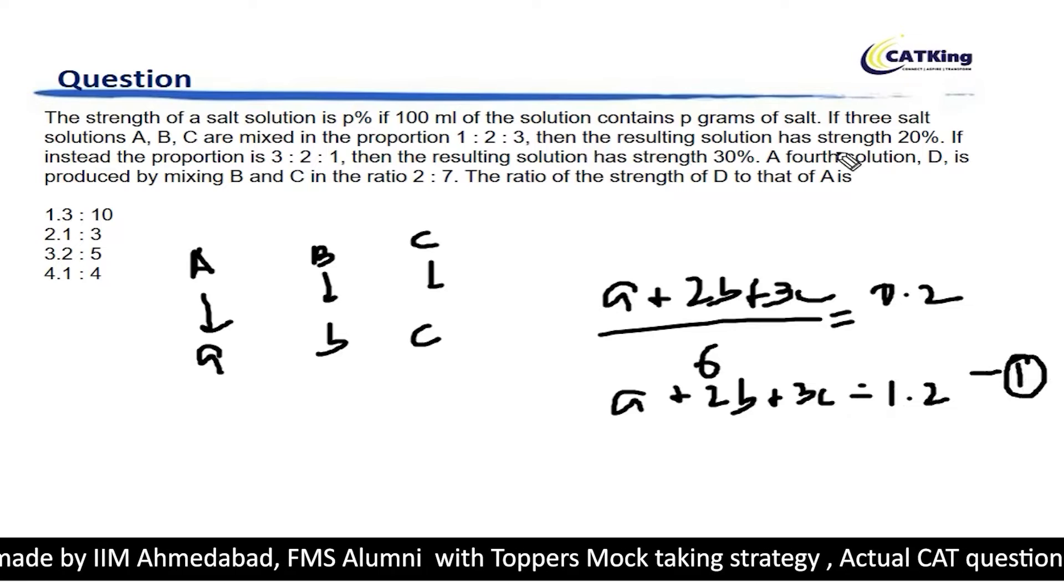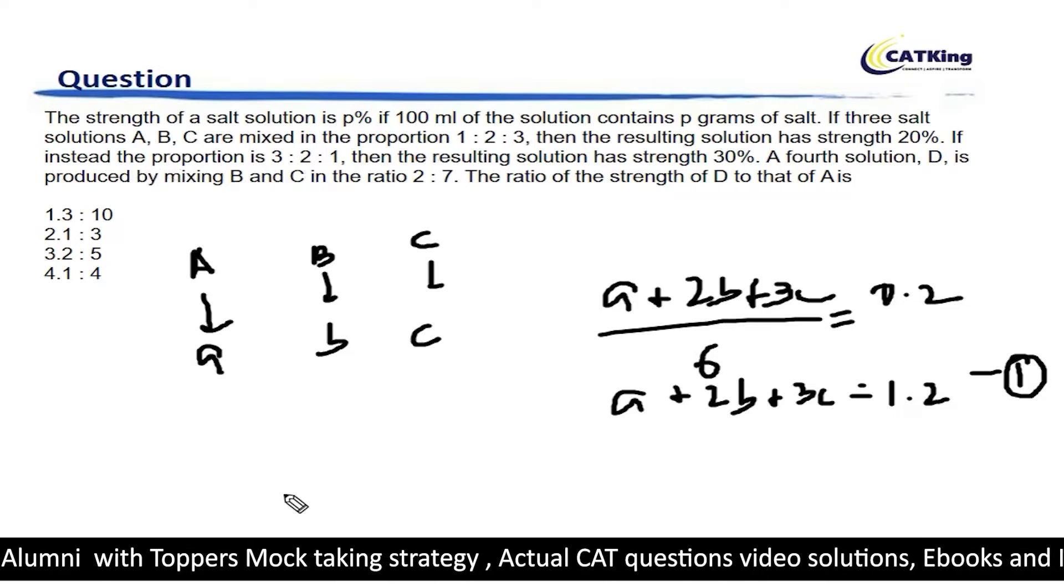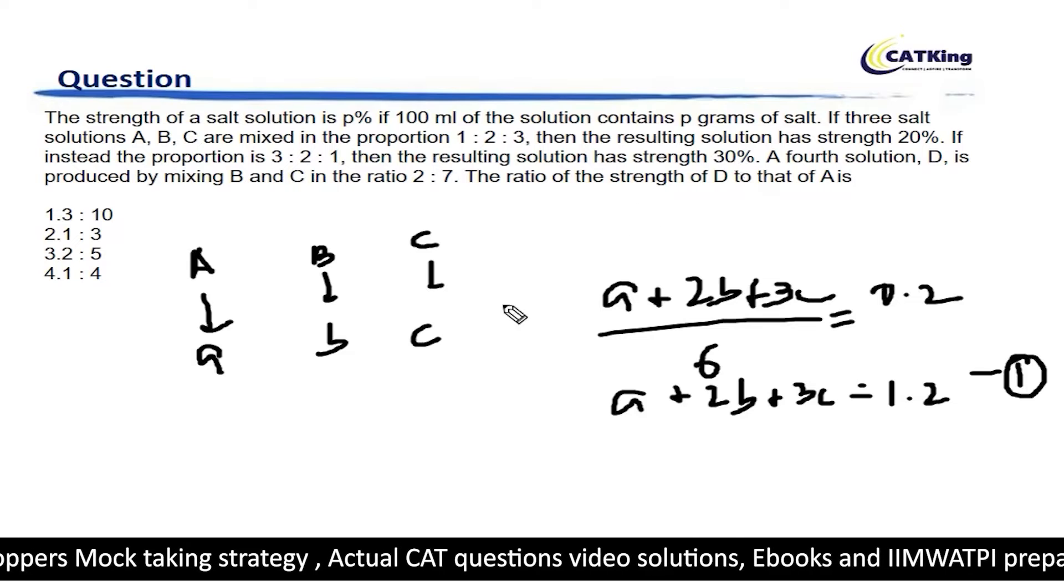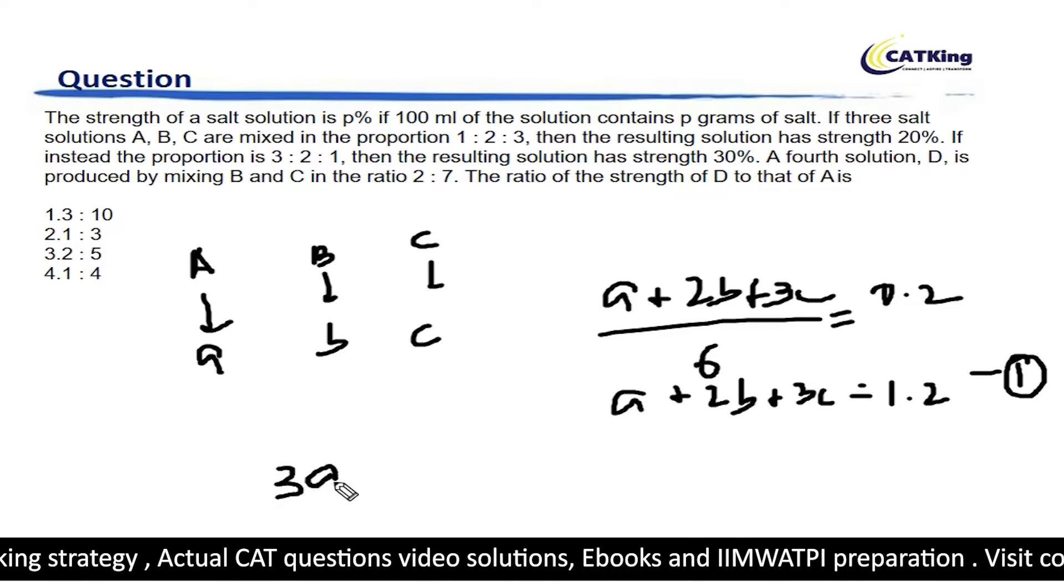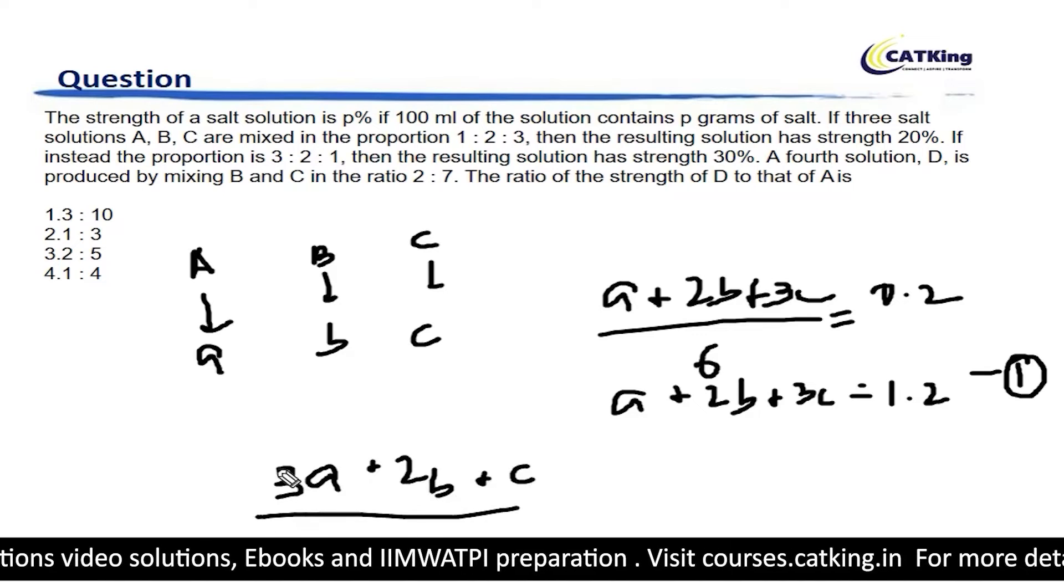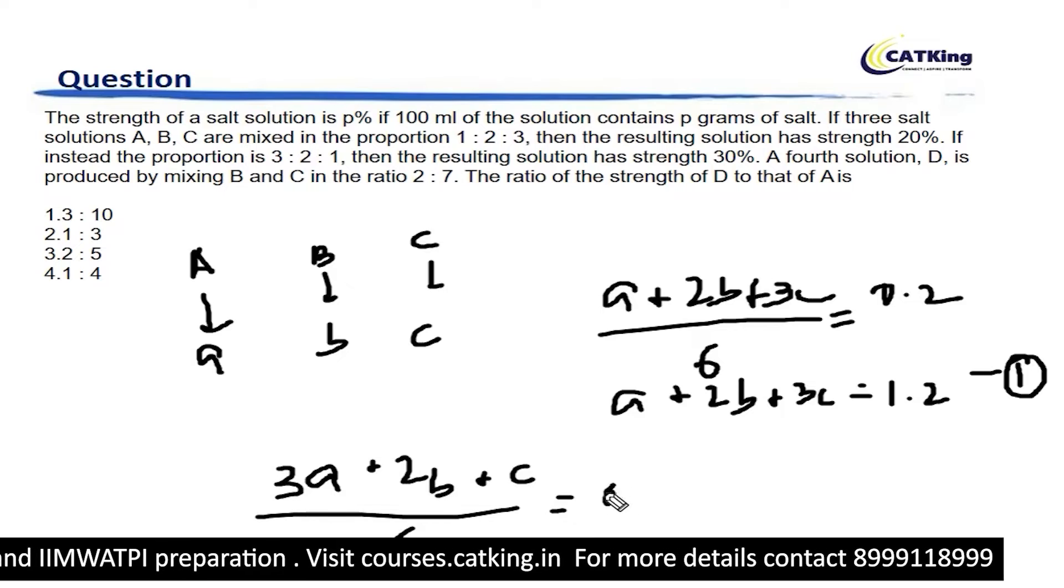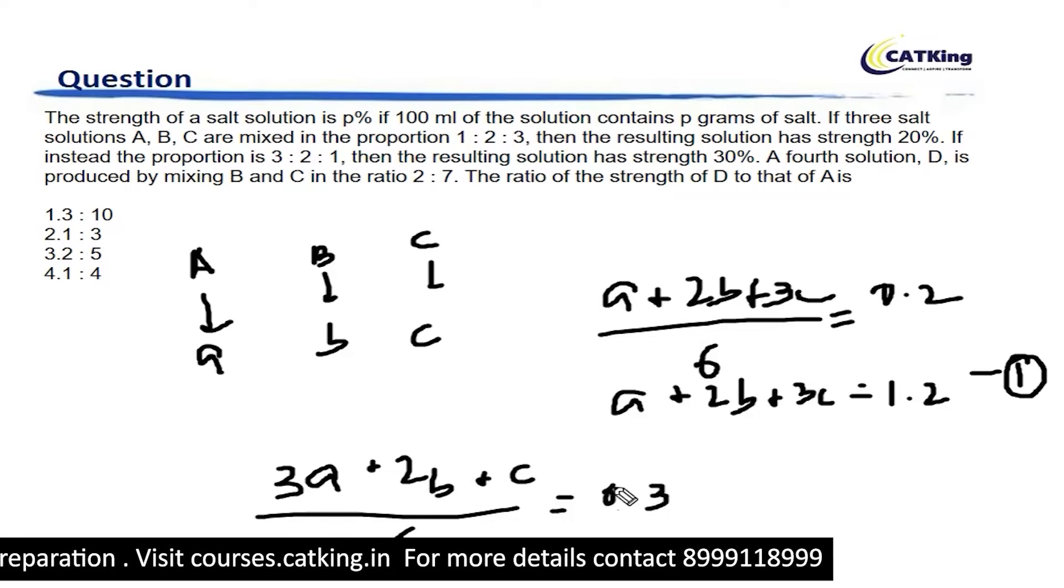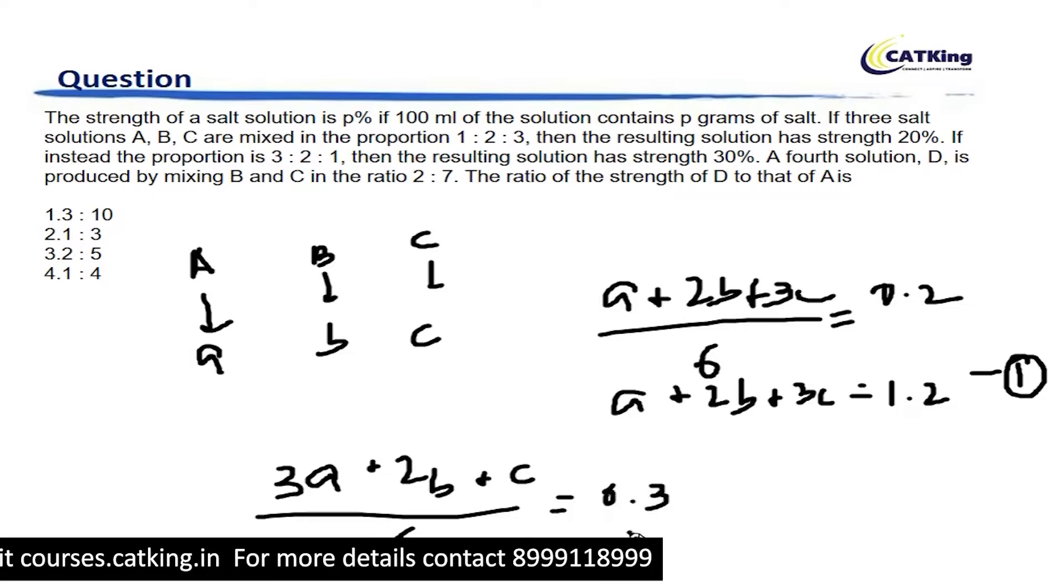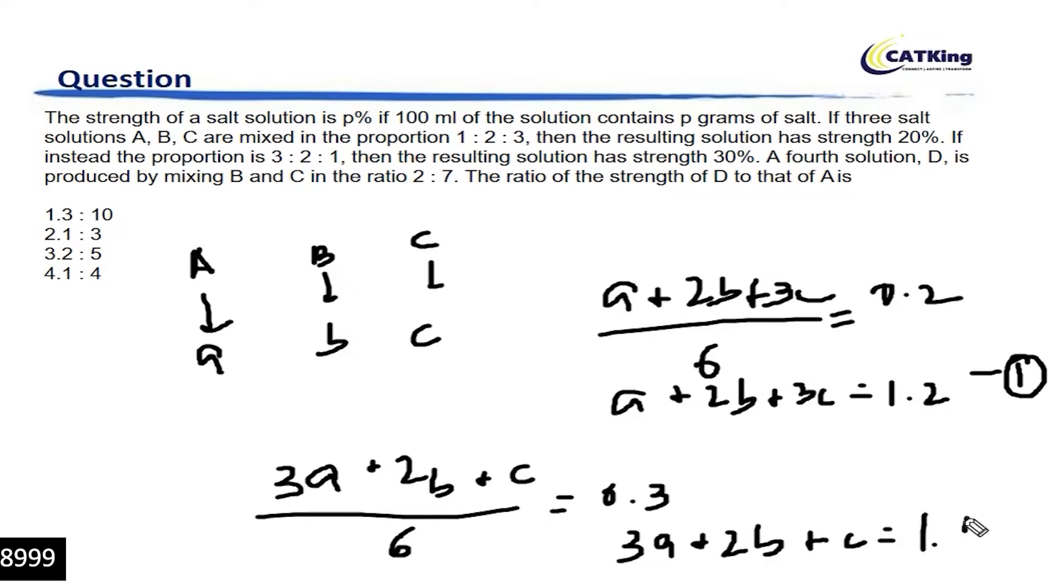Now, if instead the proportion is 3 is to 2 is to 1, then it has 30 percent strength. Then if we take 3A plus 2B plus C, the concentration will become 3 is to 2 is to 1 divided by 6. That is given as 0.3. Therefore, we can say that 3A plus 2B plus C is equal to 1.8.